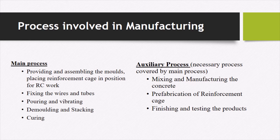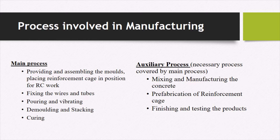The auxiliary process is a necessary process covered by the main process — without the auxiliary process you cannot complete the main process. Like a foundation to the superstructure, it is the base. The important auxiliary activities are: mixing and manufacturing of concrete, without which prefabrication cannot be done; prefabrication of reinforcement cages; and finishing and testing the products for compressive strength, tensile, or flexure results.